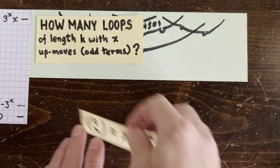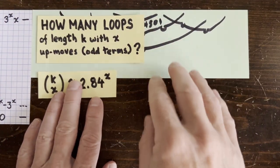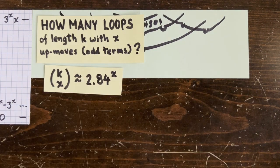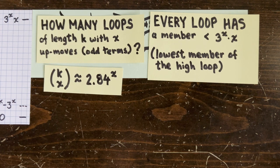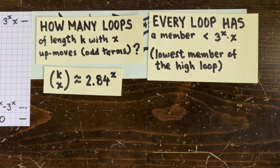Which means, yes, there are an exponential number of loops between the outer loop and the inner loop. In general, every loop has some member less than 3 to the x times x. That's the neighborhood of the inner loop's smallest member.